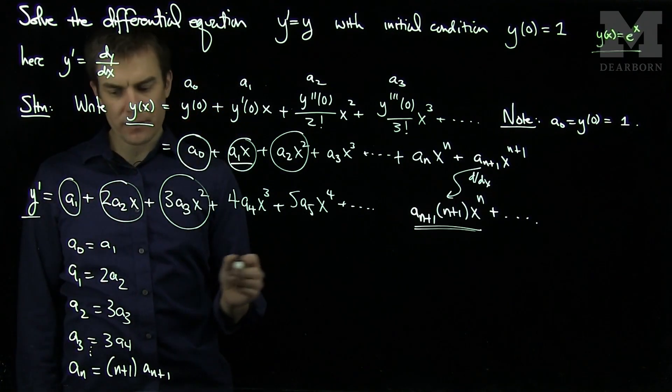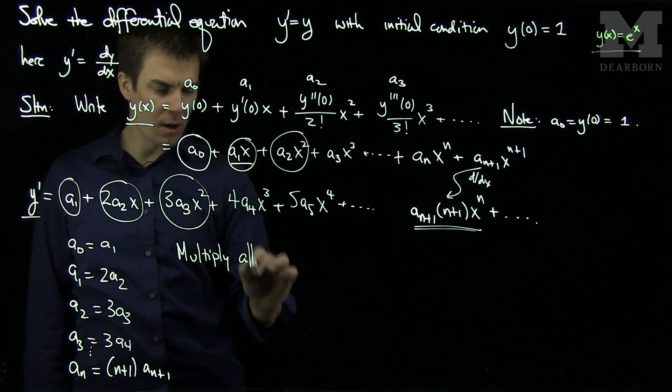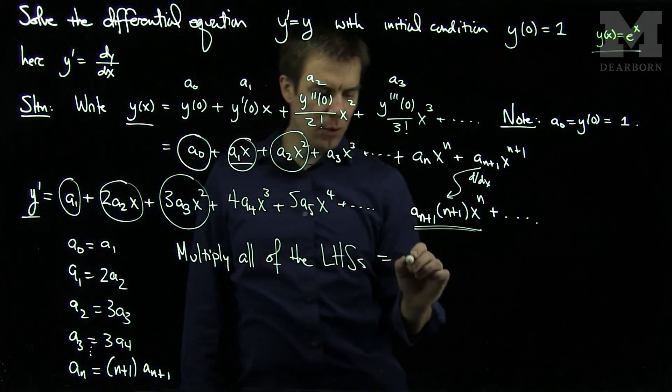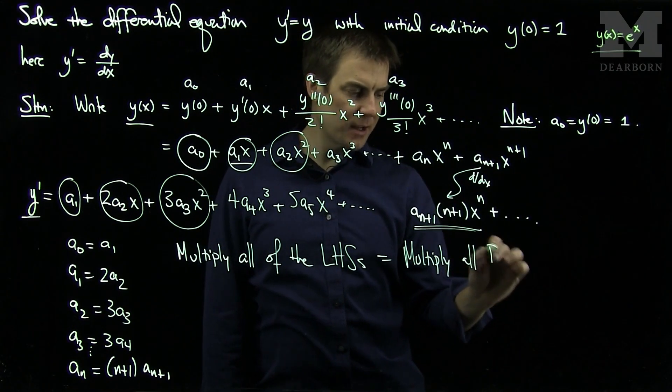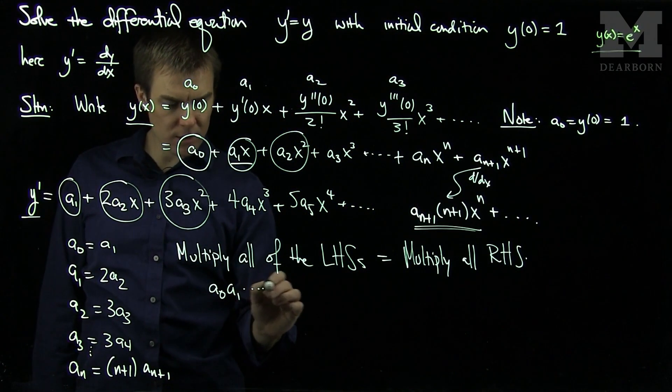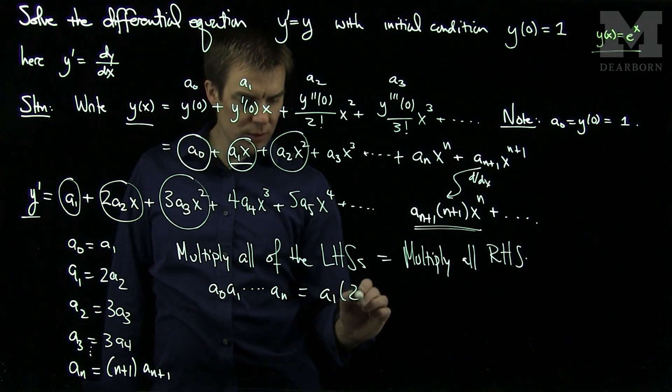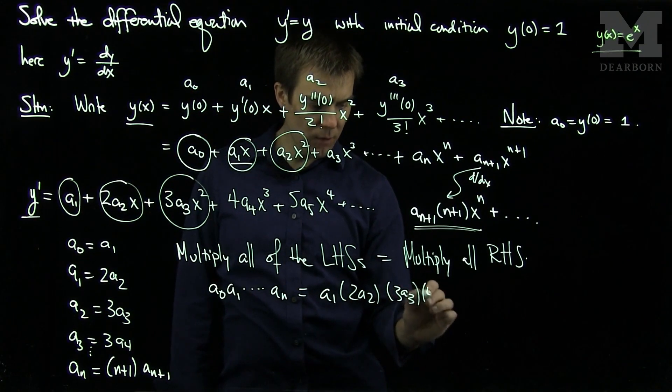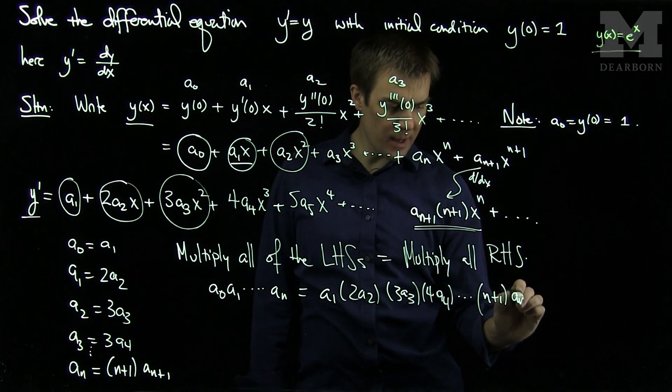And the trick with solving these differential equations, what we're going to do is we're going to multiply all of the left-hand sides, and that will be equal to what we get when we multiply all the right-hand sides. So if we multiply all of the left-hand sides, we get a0, a1, an is equal to a1, and then 2 a2, 3 a3, 4 a4, and then n times n plus 1, an plus 1.